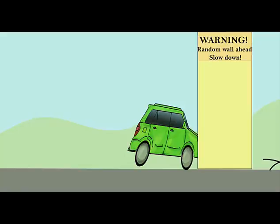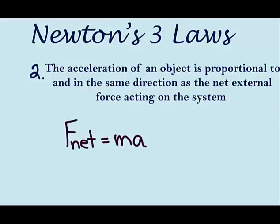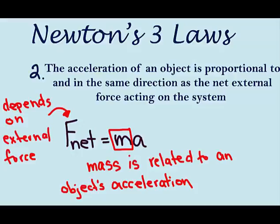So Newton's second law says that acceleration is always in the direction of the net force. We express this as F net equals ma. And mass is related to acceleration, which also depends on the net force involved.